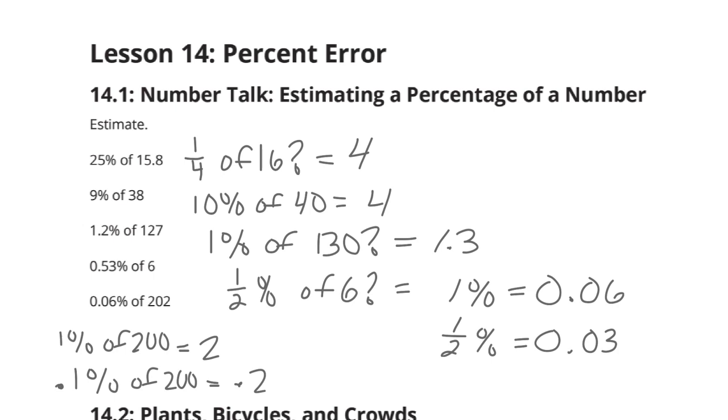What about 0.01% of 200? That's going to be 0.02. And 0.06% is going to be 6 times bigger than that. So we're going to be looking at 0.12. All right.